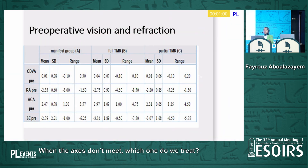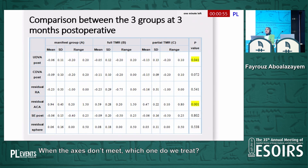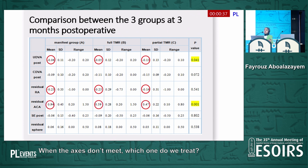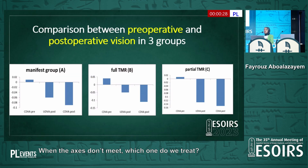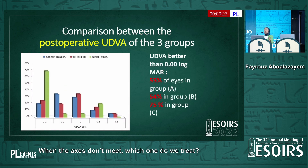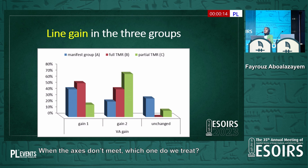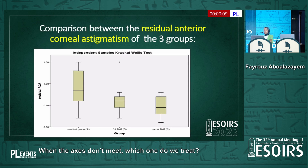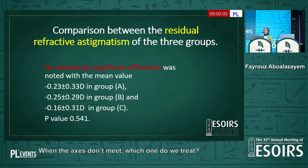These were the preoperative refractive astigmatism values — all comparable. After three months, we found that the unaided post-operative visual acuity was highest in the partial TMR group. The residual refractive astigmatism was lowest in the third group, and statistically significant. As you can see, the third group had the highest unaided visual acuity — about 75% of these patients had uncorrected vision better than 6/6, and about 65% gained more than two lines. The residual anterior corneal astigmatism was also lowest in this group, though no statistically significant difference was found in manifest astigmatism between groups.